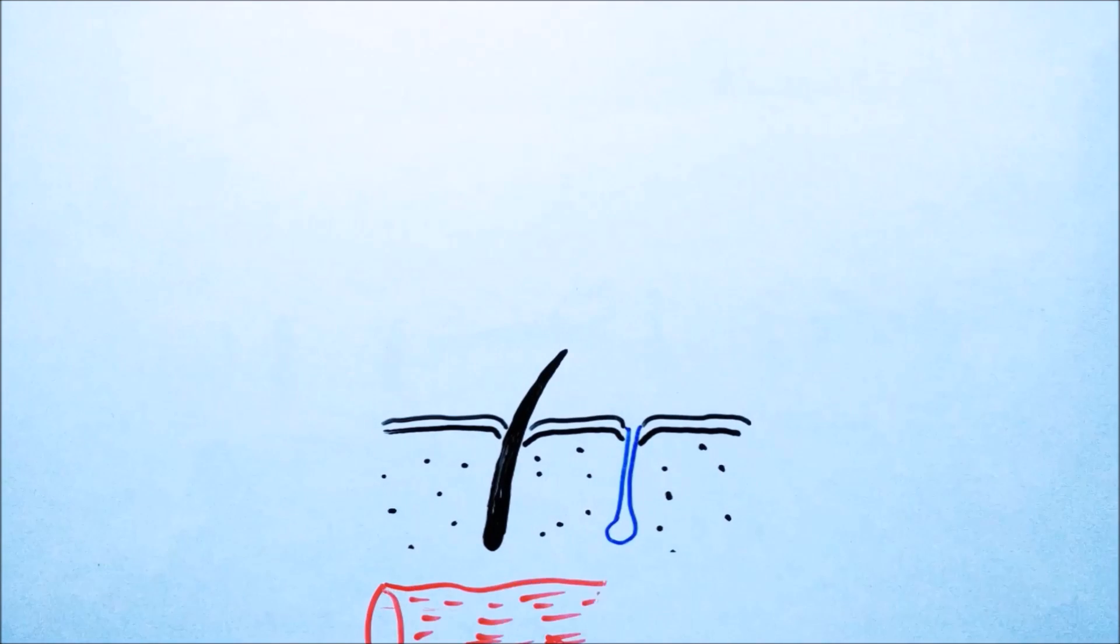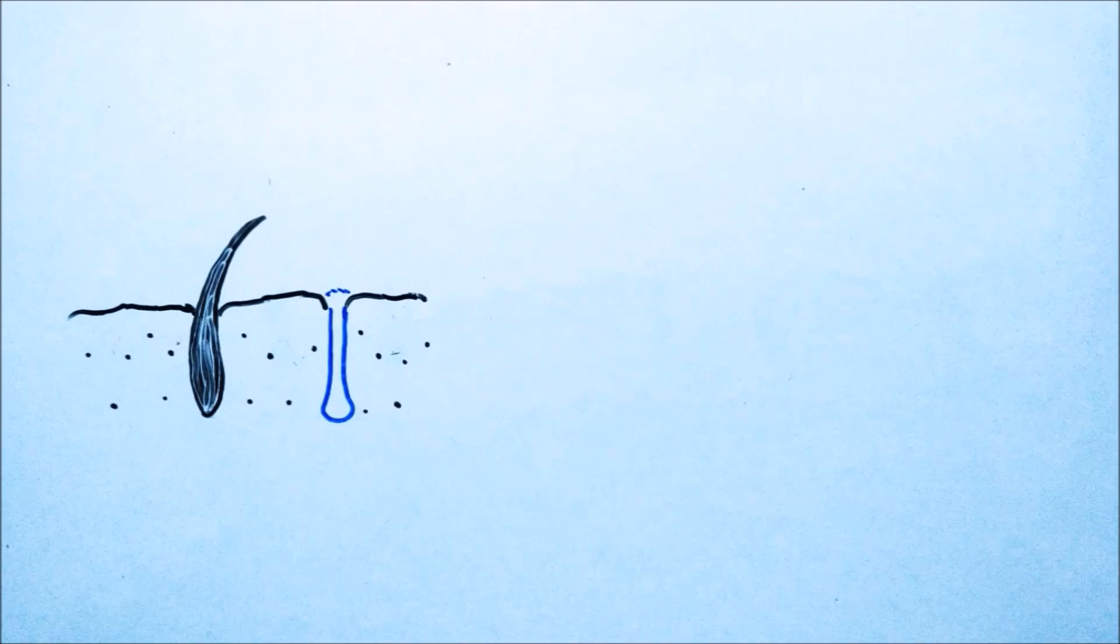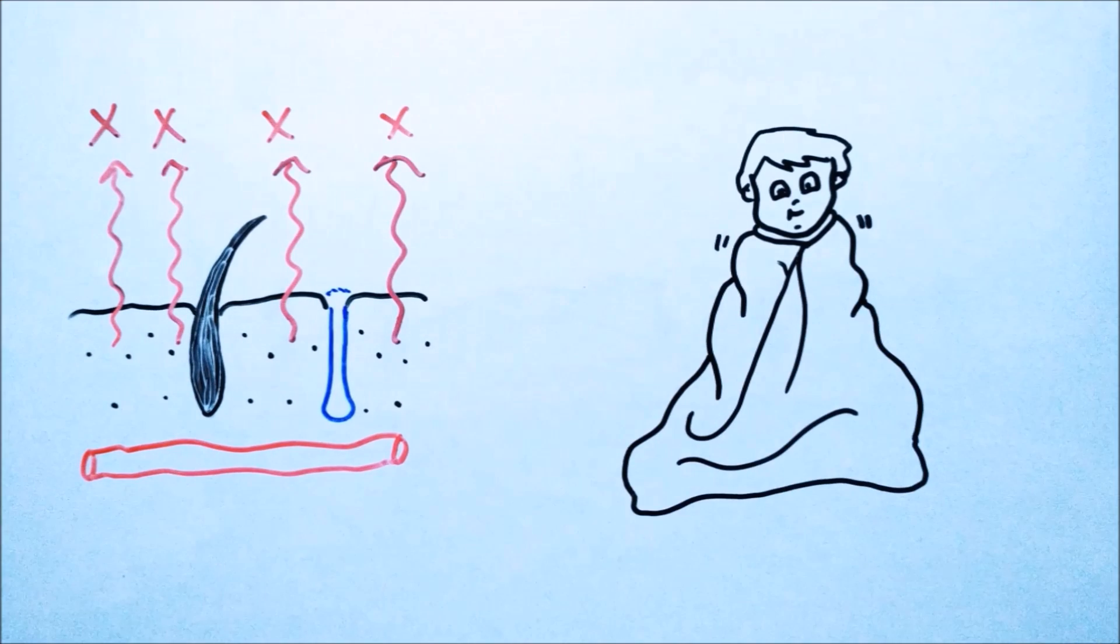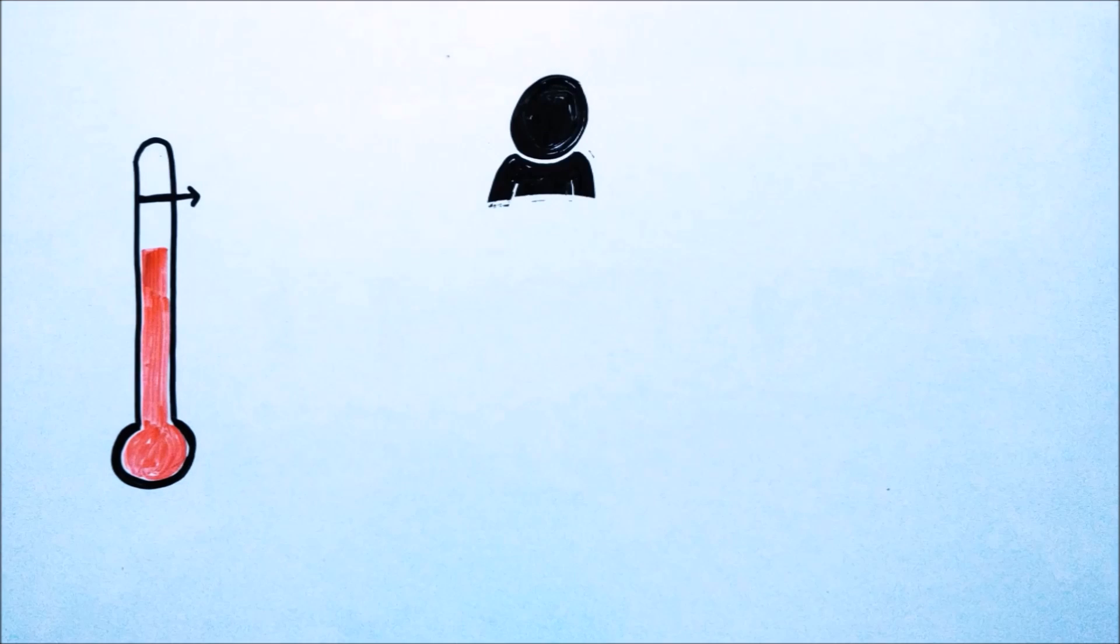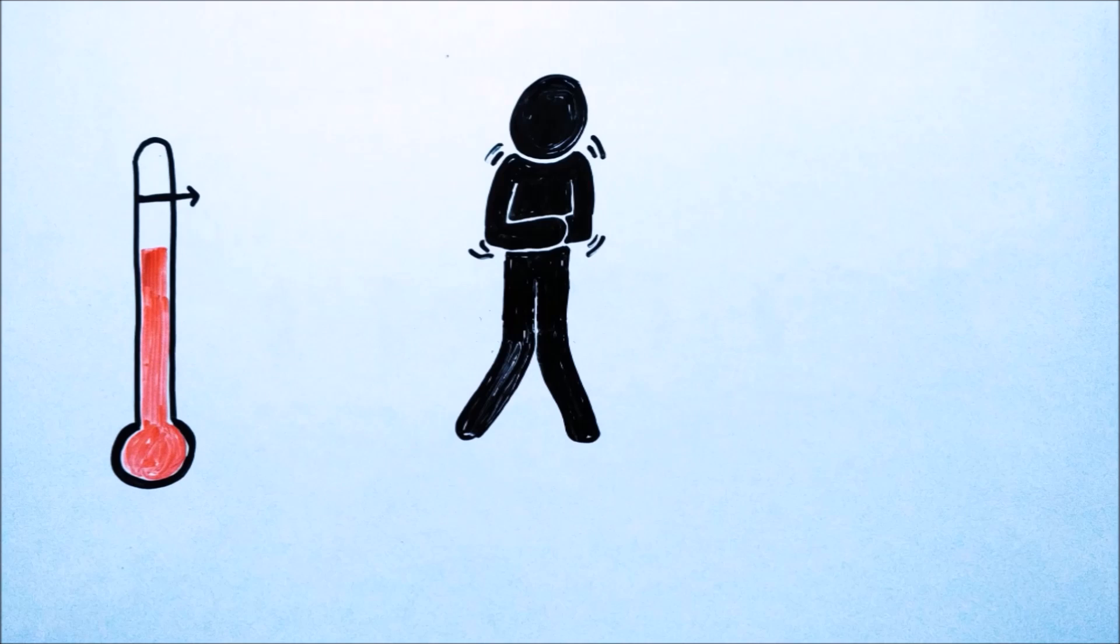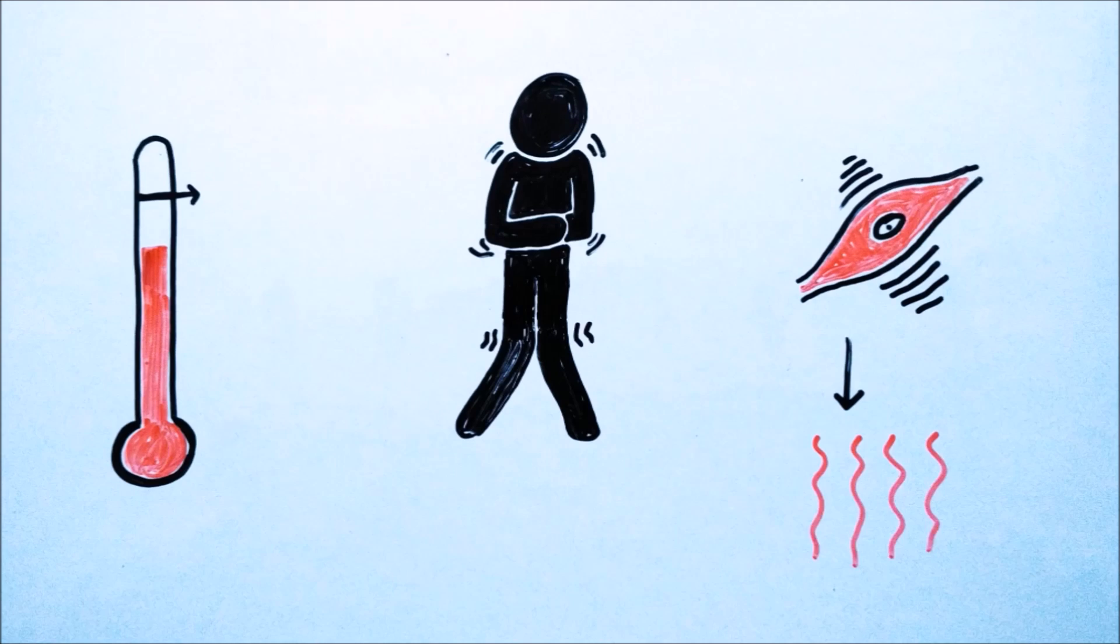The blood vessels of skin constrict to increase the blood supply to the vital organs. This reduces heat loss through skin and causes the person to feel cold. If it is insufficient to make the temperature match the new set point, then shivering begins to use muscle movement for production of heat.